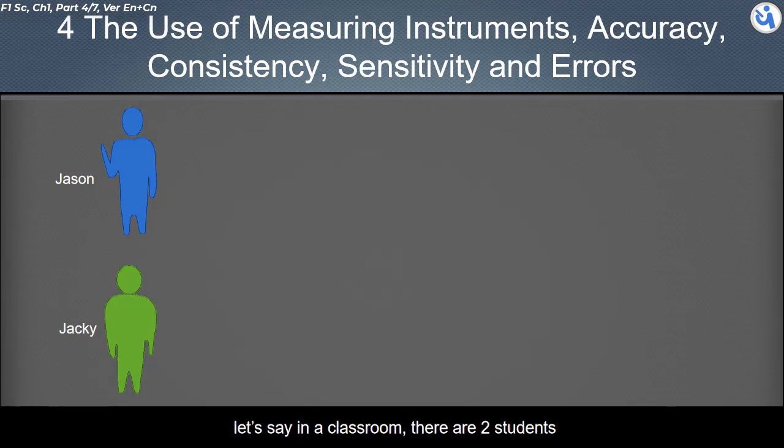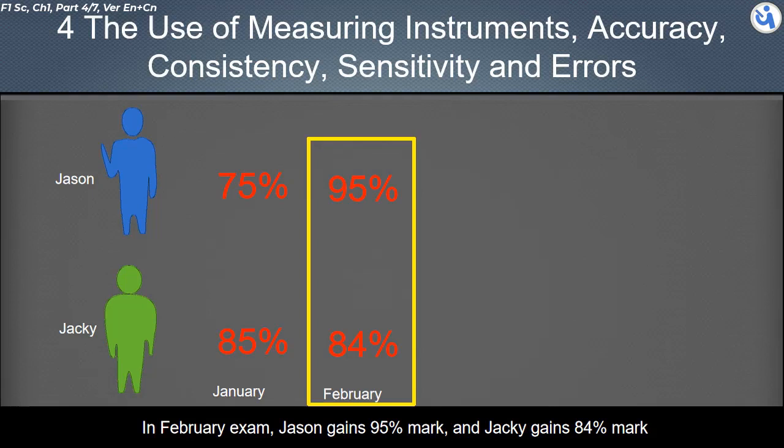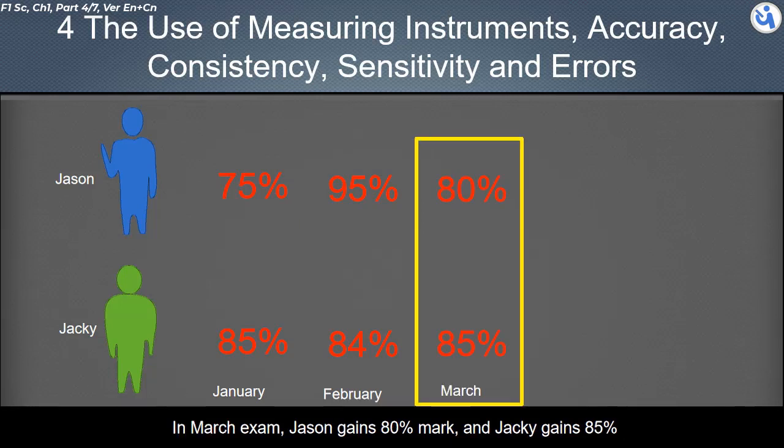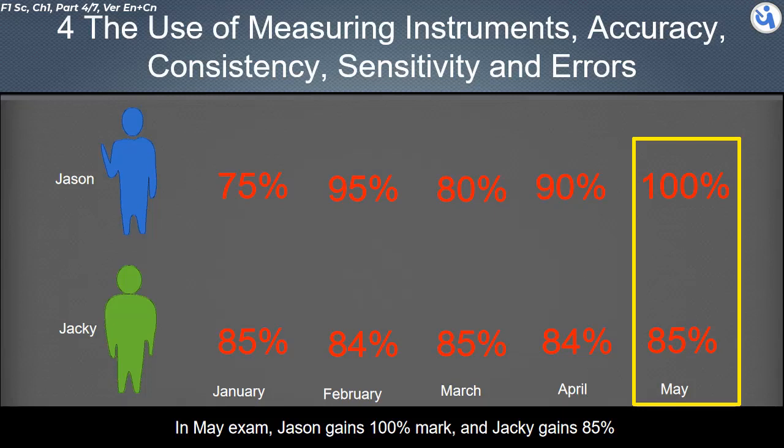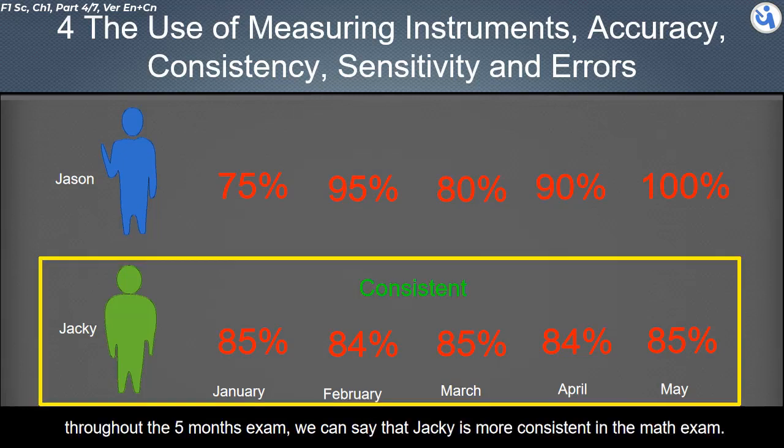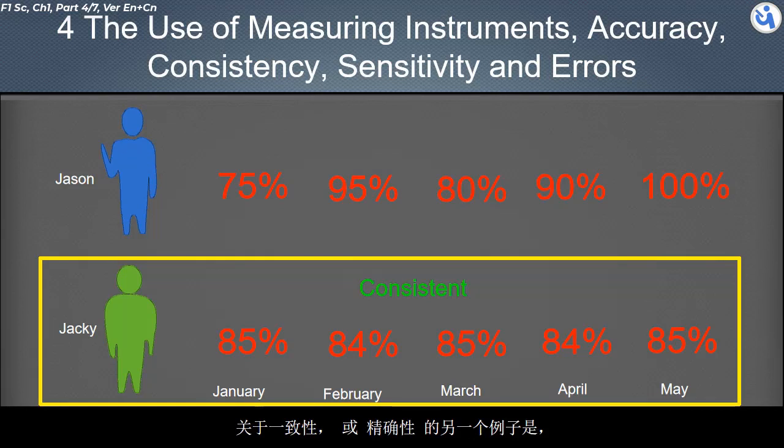Another example about the consistency is, let's say in a classroom, there are two students who going to take same mathematics exam. In January, Jason gains 75% mark and Jackie gains 85% mark. In February exam, Jason gains 95% mark and Jackie gains 84% mark. In March exam, Jason gains 80% mark and Jackie gains 85%. In April exam, Jason gains 82% mark and Jackie gains 84%. In May exam, Jason gains 100% mark and Jackie gains 85%. Throughout the five months exam, we can say that Jackie is more consistent in the math exam, as Jackie able to repeatedly come out the same result at 84% to 85%.